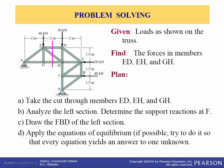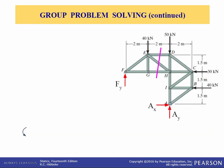Let's do another one. Here we have a truss loaded as shown. Find the forces in members ED, EH, and GH. We're going to make a cut along this purple line and analyze the left section because it has fewer forces applied to it. Then we'll apply the equations of equilibrium. We will need the reaction force at F, so we're going to determine that first.